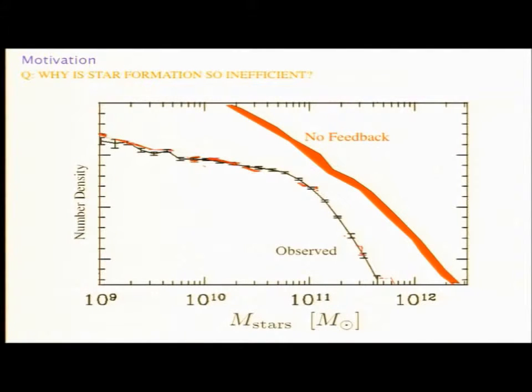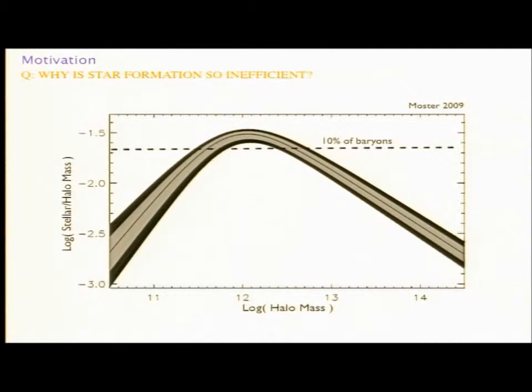I don't need to really give the introduction. We know we need feedback to explain the mass function of galaxies or this plot that keeps coming up, the reason why star formation is so inefficient at low masses. We think that at low masses, that's stellar feedback, and I won't be talking at all about AGN feedback at high masses.